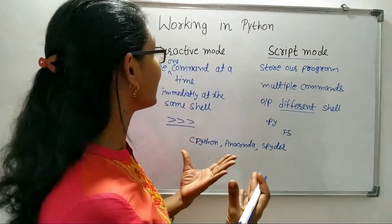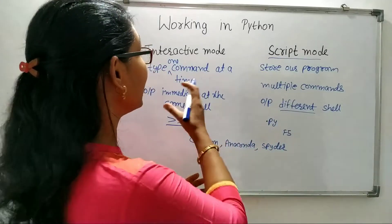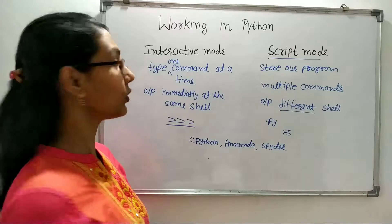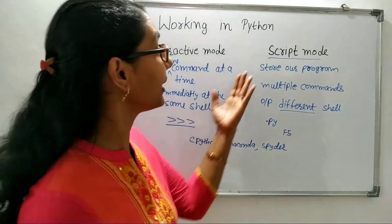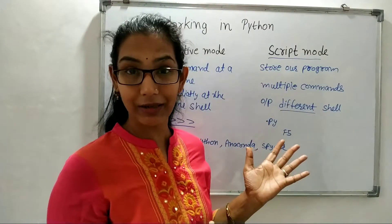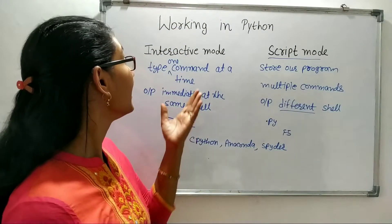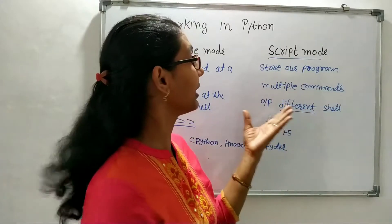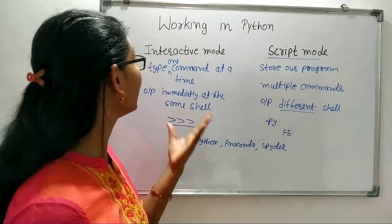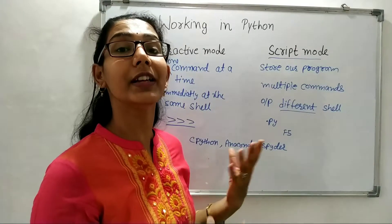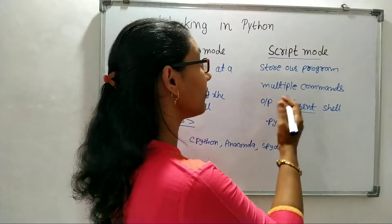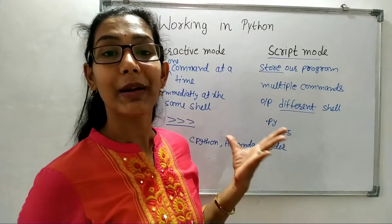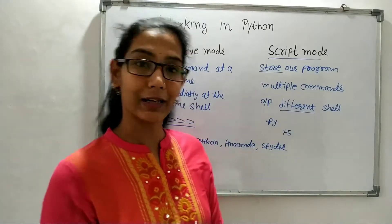So to summarize, the differences between interactive mode and scripting mode are: first, in interactive mode we use only one command at a time, but in scripting mode we use multiple commands at a time. Second, interactive mode gives the output on the same screen, while scripting mode gives the output on a different screen. Third, interactive mode does not save commands, but in scripting mode we can save or store our program on the disk.